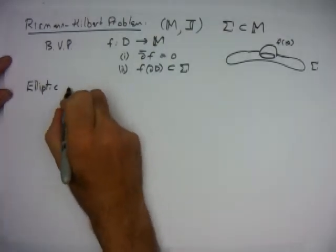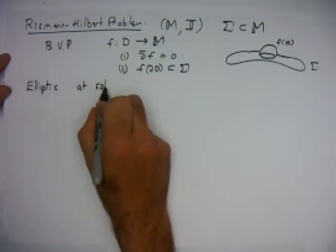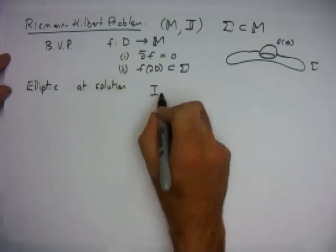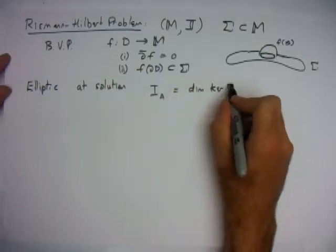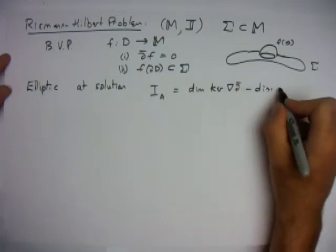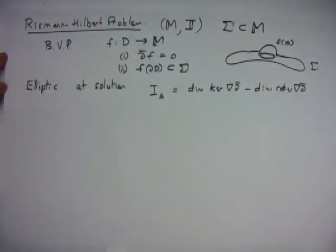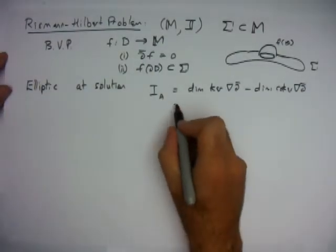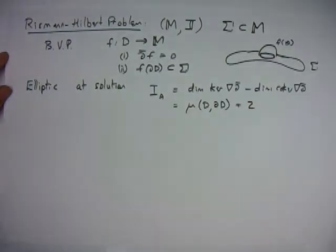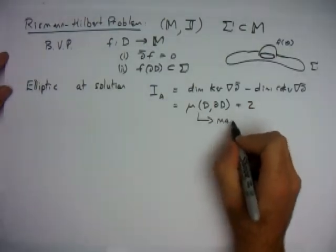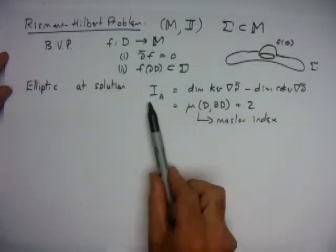One consequence of being an elliptic boundary value problem is that at a solution you have the analytic index, which is the dimension of the kernel of the linearization of the del-bar operator minus the dimension of the co-kernel of the linearization. Another way of writing this is that it equals the Maslov class plus two.